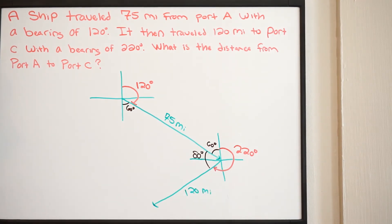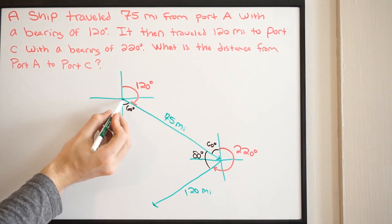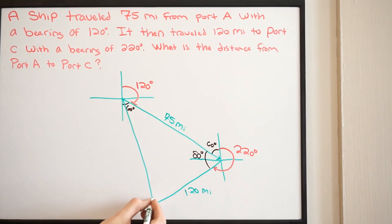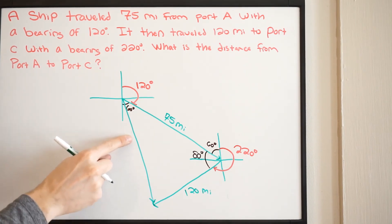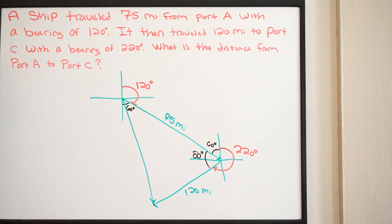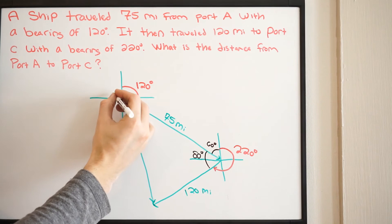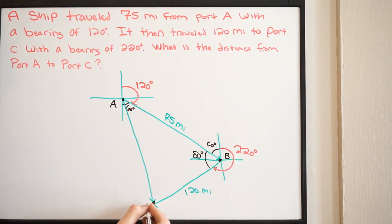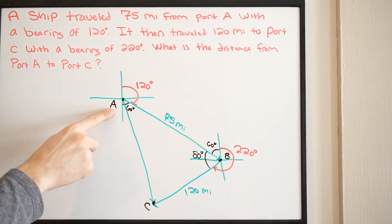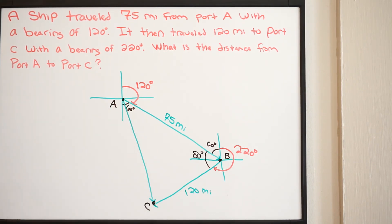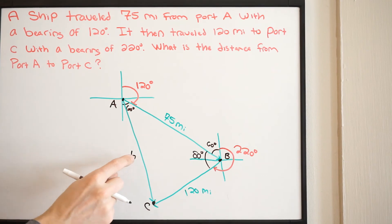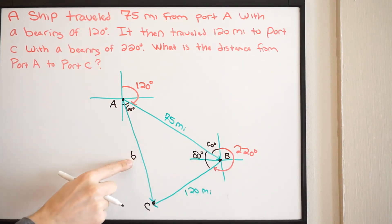We draw in our resultant vector by connecting the starting point to the tip of the last vector. We label the triangle: vertex A at the start, vertex B at the junction, and vertex C at the end. We're trying to find the distance from port A to port C. This is a law of cosines problem because we have side-angle-side, and we're solving for side B, which is opposite angle B.